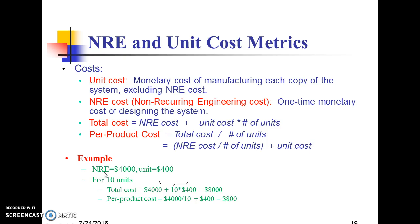For example, if NRE cost is $4,000 and unit cost is $400, then for 10 units: Total Cost = $4,000 + (10 × $400) = $8,000. Per Product Cost = ($4,000 / 10) + $400 = $800.